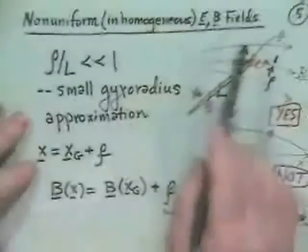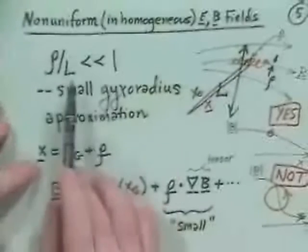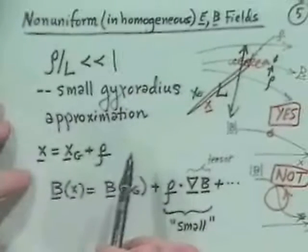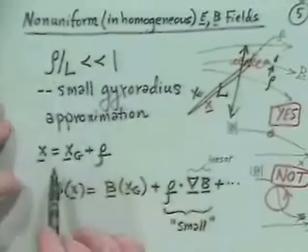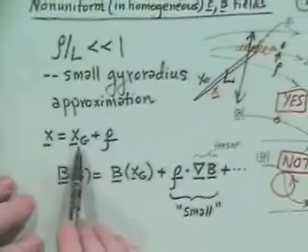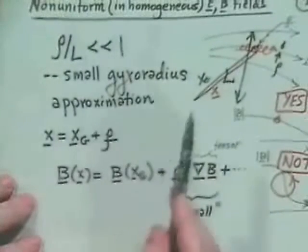Okay, so next what we want to do is talk a little bit about this grad B tensor. And again, what we're trying to do is solve this case of the situation where we have non-uniform or inhomogeneous electric and magnetic fields. And we want to have in mind that we have a small gyroradius approximation.